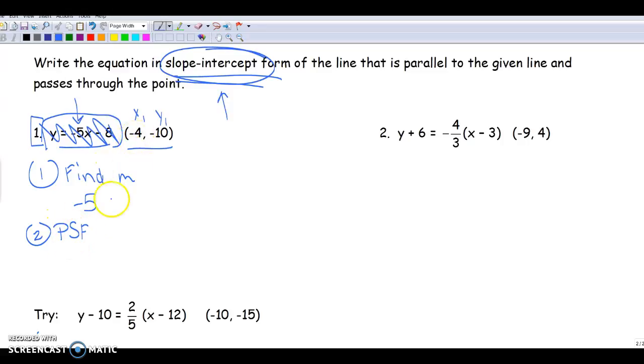So what we're going to do is we're going to do y minus negative 10, or y plus 10, equals your slope, negative 5, and then x minus negative 4, or x plus 4.